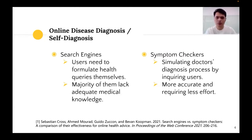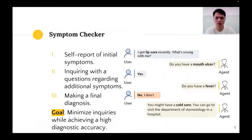In recent years, many symptom checking tools have been developed as another alternative, such as well-known symptom checkers from Mayo Clinic and WebMD. They simulate a doctor's diagnosis process by inquiring users with a series of questions about possible symptoms. The process can be summarized into three steps. First, the patient presents a self-report of initial symptoms. Then, the agent or doctor inquires the patient with a series of questions regarding additional symptoms. At last, a final diagnosis is made.